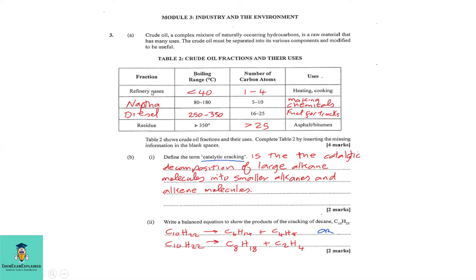For the third fraction, we are given only the number of carbon atoms: 16 to 25. That suggests a heavy liquid, and therefore that would be the diesel fraction, where the boiling range would be around 250 to 350°C. It is used as fuel for trucks.